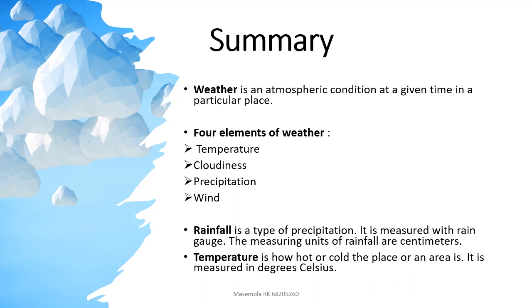That's where our lecture for today will end. Summary — let's see what we've learned. Weather is an atmospheric condition at a given time in a particular place. The four elements of weather are temperature, cloudiness, precipitation, and wind. Rainfall is a type of precipitation and is measured with a rain gauge. The measuring units of rainfall are centimeters. Temperature indicates how hot or cold a place or area is, and it is measured in degrees Celsius. Thank you — if there are any questions or clarifications, please feel free to ask.